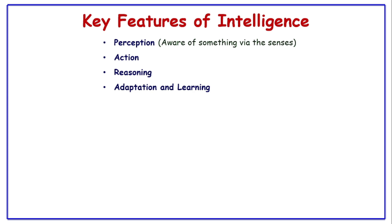Then adaptation and learning, which refers to the ability of an intelligent system to adjust its behavior or response based on the situation or environment. Now the term communication in intelligence usually refers to communication intelligence, where the intelligence-gathering discipline is focused on intercepting and analyzing communications between people. This can include phone calls, text messages, emails, online chats, and other forms of electronic communications.